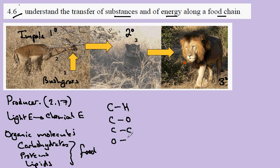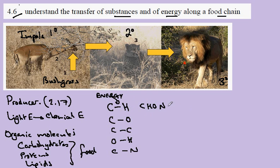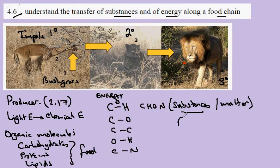These molecules are composed of carbon-to-hydrogen bonds, carbon-to-oxygen bonds, carbon-to-carbon bonds, oxygen-to-hydrogen bonds, and bonds including carbon-to-nitrogen. These bonds all represent energy, but the carbon, hydrogen, oxygen, and nitrogen — these are the substances which you might call matter.